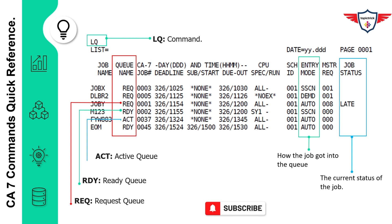The next important column is entry mode. This column shows how the mainframe job gets into its respective queue — in other words, how these jobs are triggered. For example, DEMD is short for demand, and it tells you that somebody used a demand command to tell CA7 to execute this job. AUTO indicates that the job was triggered by another job or could be a data set trigger job. The last column is job status, which provides the current status of the job — for example, whether the job is late, has abended, or has failed with a JCL error.